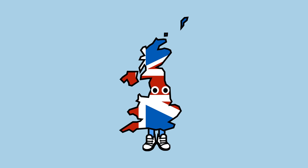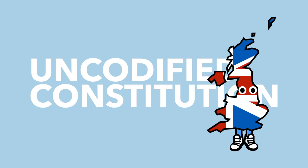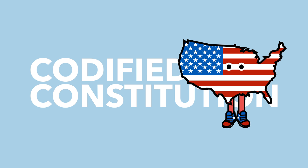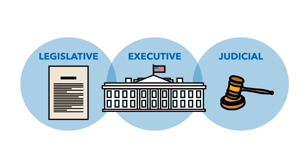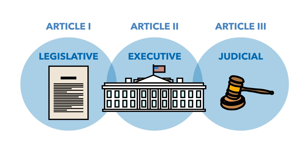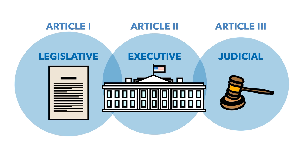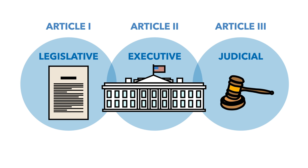Unlike the UK, which has an uncodified constitution, the US has a codified constitution, meaning that the entire constitution can be found in one document. In the US, the three branches of government are outlined in Articles 1, 2, and 3 of the United States Constitution, so let's go through each branch individually.